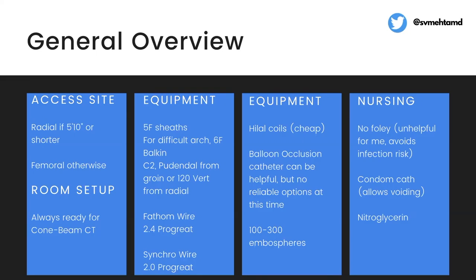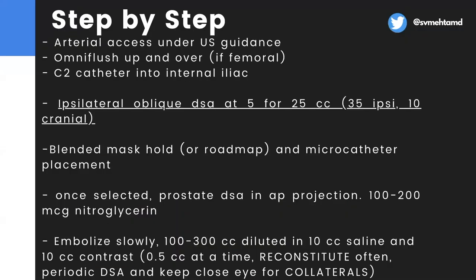For nursing setup: no Foley catheter — I find it completely unhelpful. My first case, nurses tried three times and couldn't get it in due to the BPH, and when I did the case without it there was no benefit. Instead I give the patient a condom catheter for voiding on the table. I ask nursing to have nitroglycerin in the room before we start. All my cases are done under monitored anesthesia care.